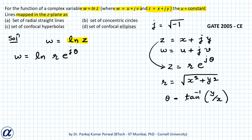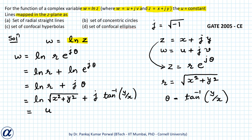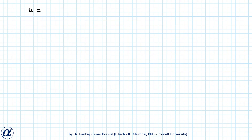So if I simplify, w equals to ln(r·e^(jθ)), which equals to ln(r) plus ln(e^(jθ)), equals to ln(r) plus jθ. Since ln(e) equals 1, this becomes ln(√(x²+y²)) plus j·tan⁻¹(y/x), and that equals u plus jv.